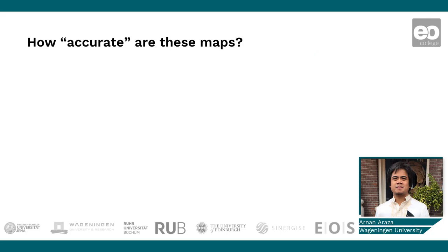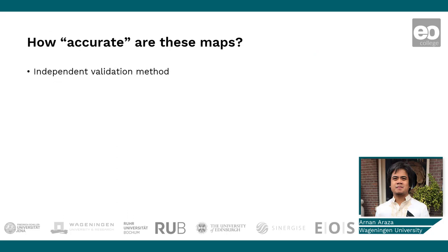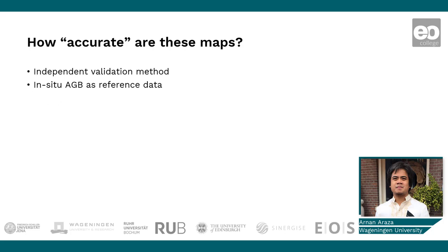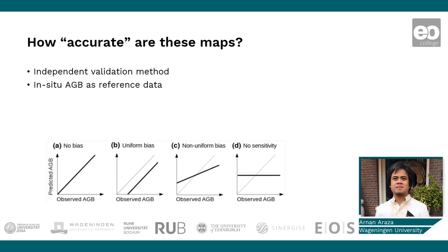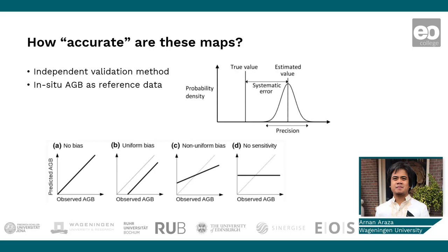But are these maps accurate? A standard important procedure is to validate maps independently, in relation to the accuracy requirements of map users, and given that non-uniform bias or systematic errors are common to AGB maps, as well as imprecision due to random errors.